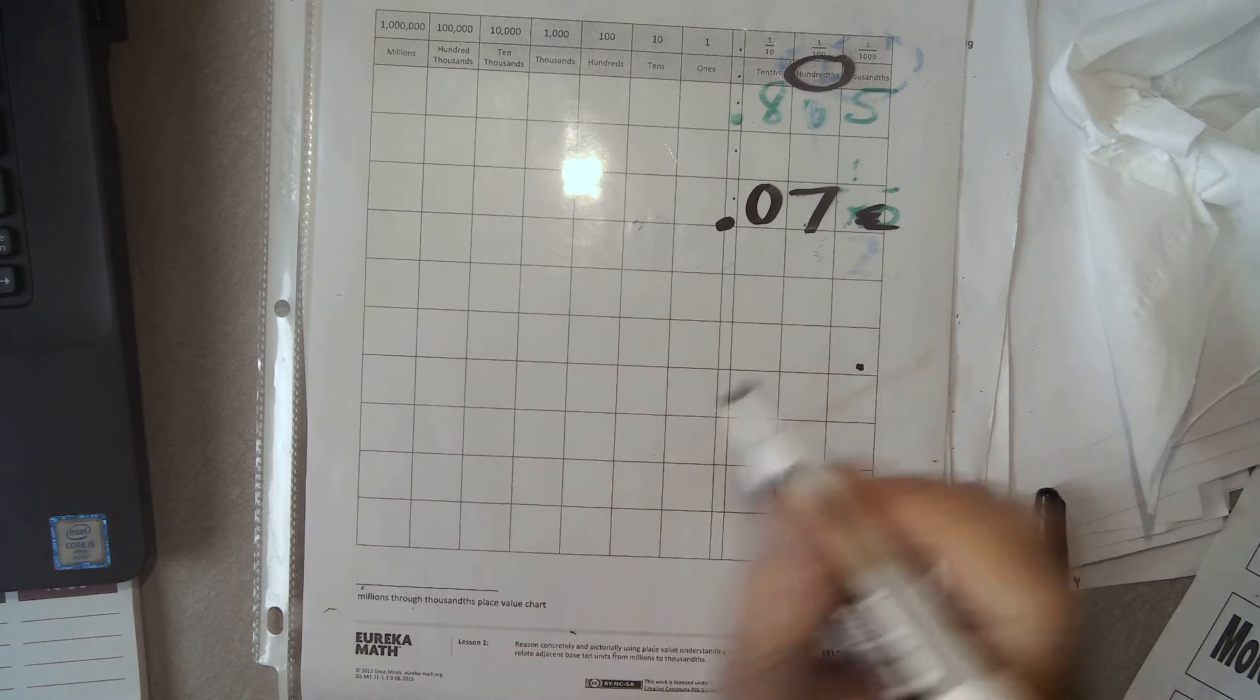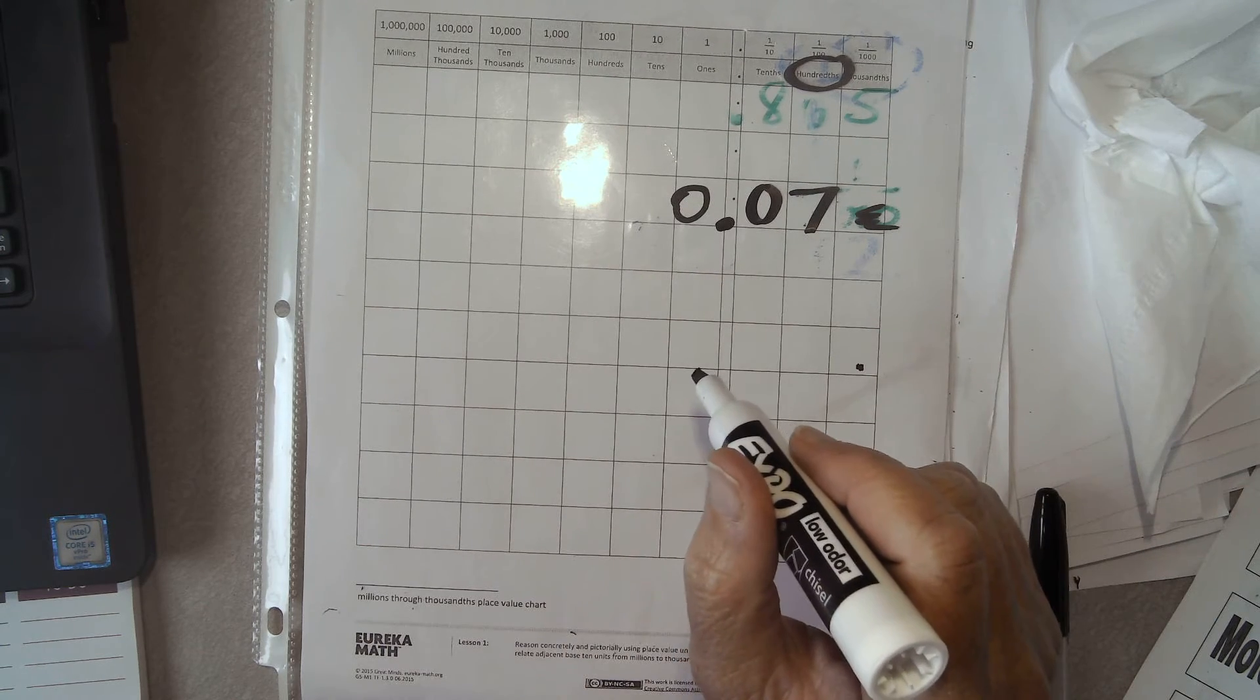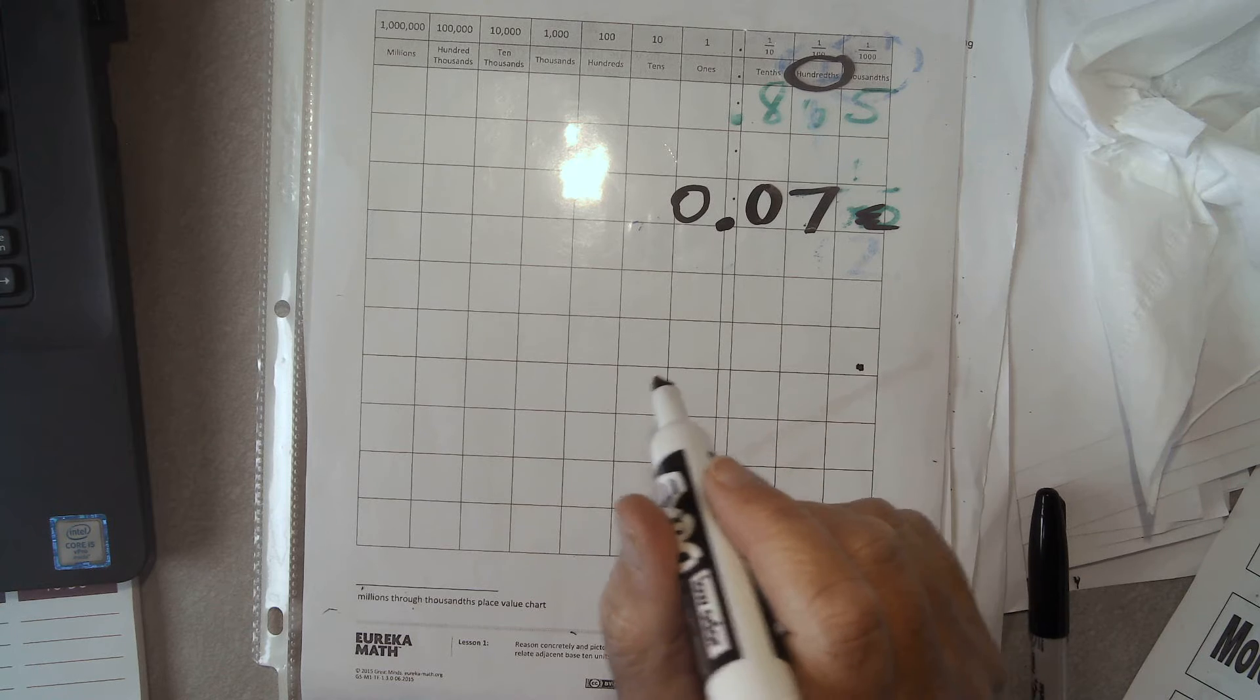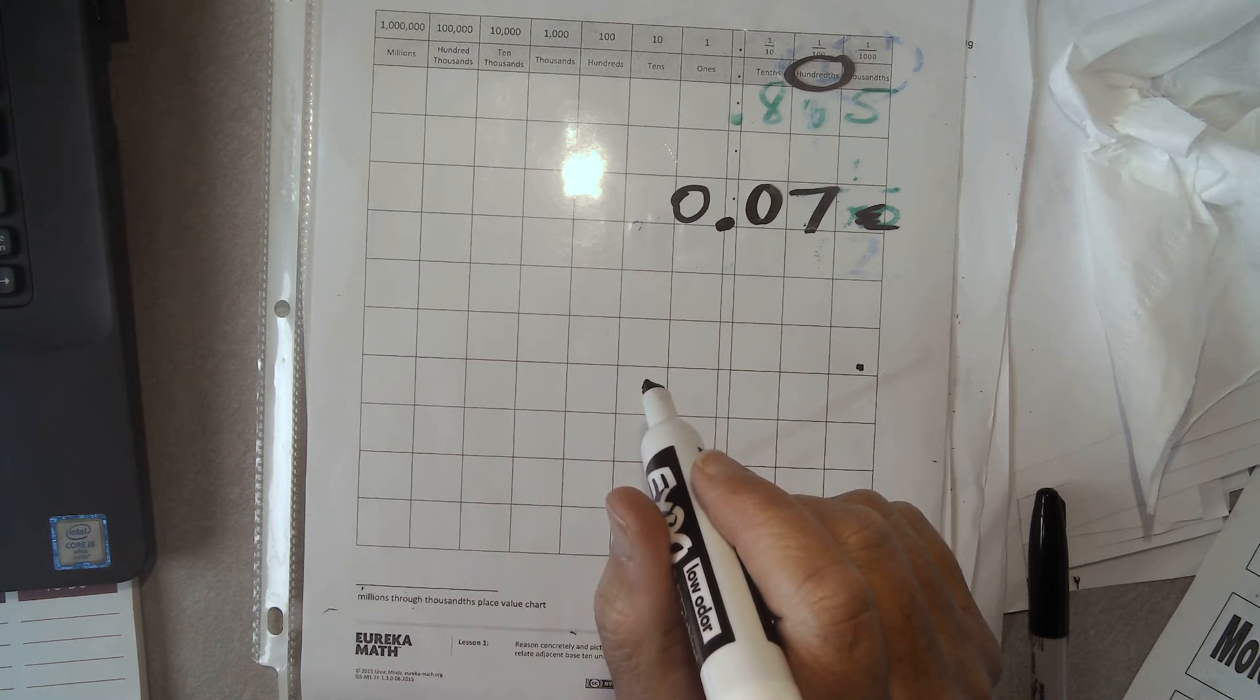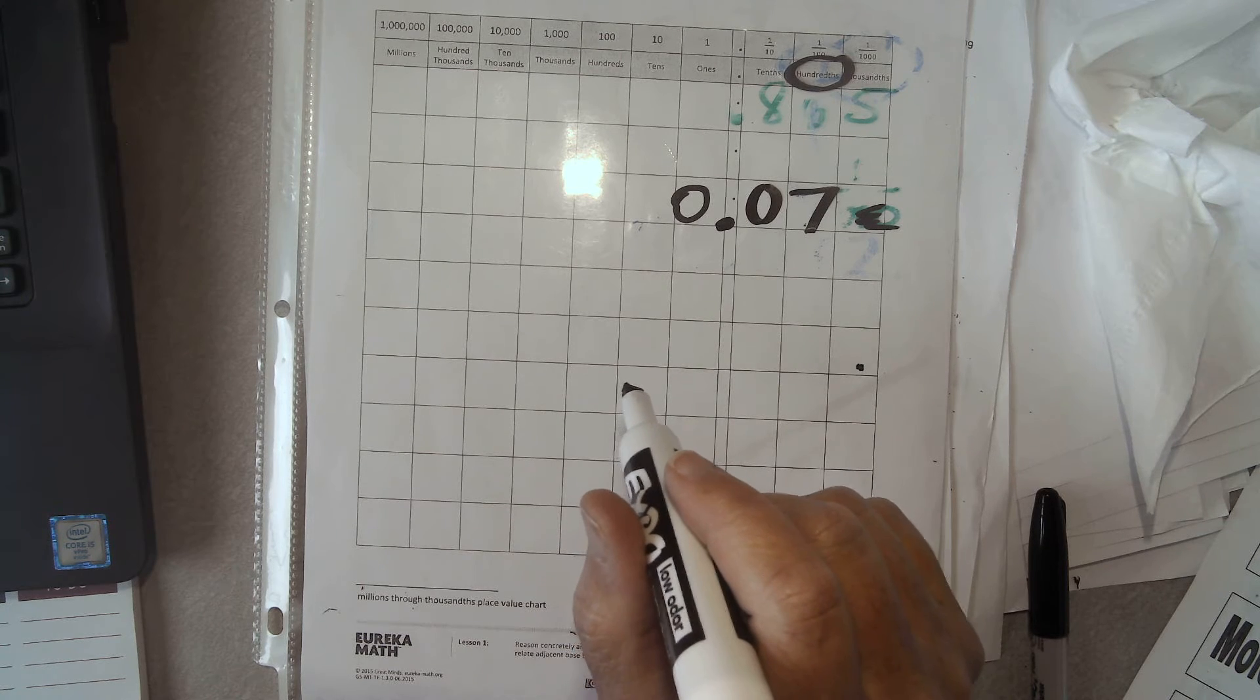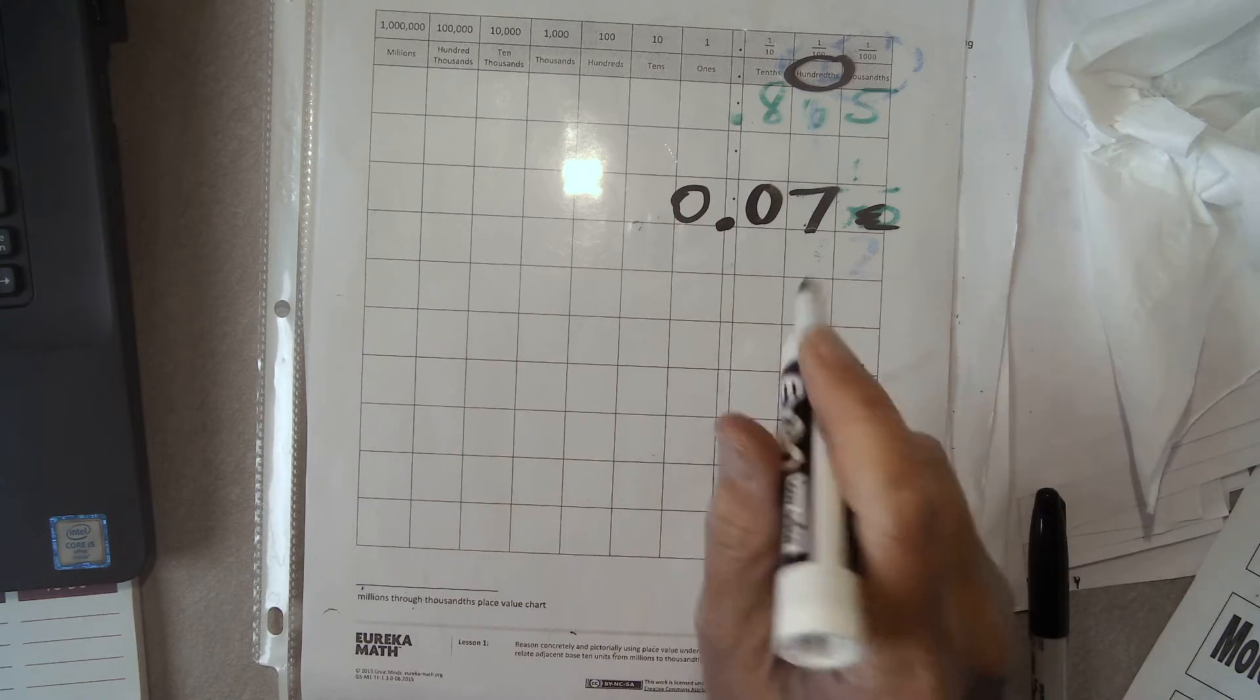Could you write 0.070? Yes, this is the same thing. You can do that. Okay, last problem on day 3. How many times greater is the value of the digit 2 in 23,876 than the value of the digit 2 in 3,254? So let's use our chart.